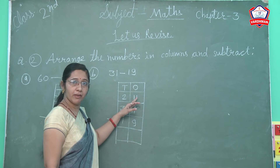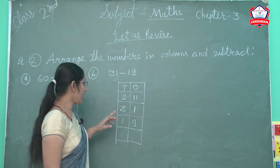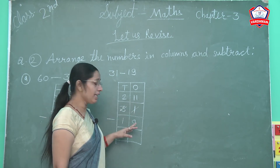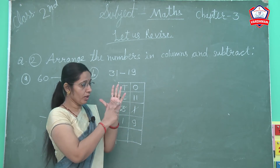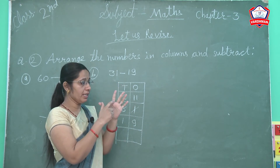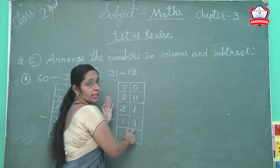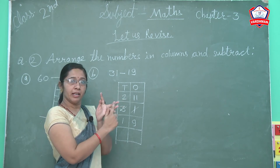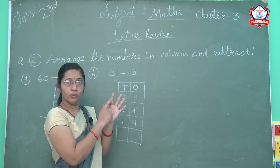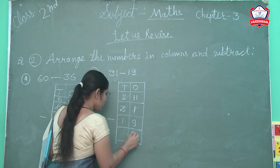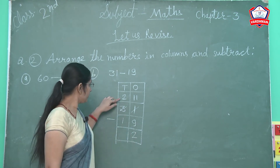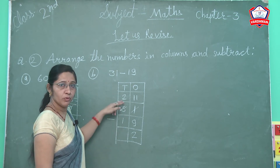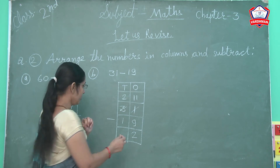So 1 cut hoke 11 ban gaya, aur 3 cut hoke 2 aa gaya. Ab new digit aa gayi: 11. 11 mein se 9 less karenge. 11 count karo — 1 through 11. We reach here, cut it 9. So cut 9 lines: 1, 2, 3, 4, 5, 6, 7, 8, 9 — 9 is cut. Now count left lines — 1, 2. How many left? 2. So write 2. Now next tens column. Tens mein new digit is 2. 2 minus 1. 2 mein se 1 less kiya, pichhe bacha 1. So write 1. The answer of 31 minus 19 is 12.